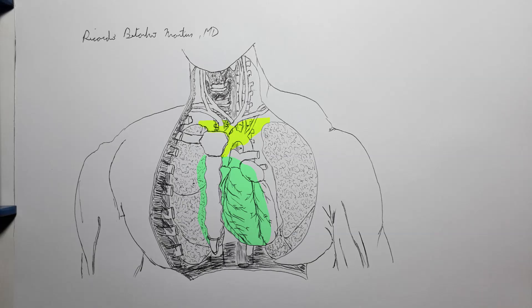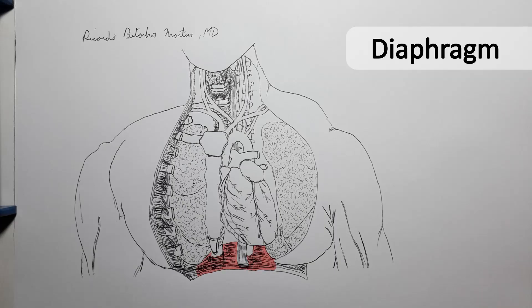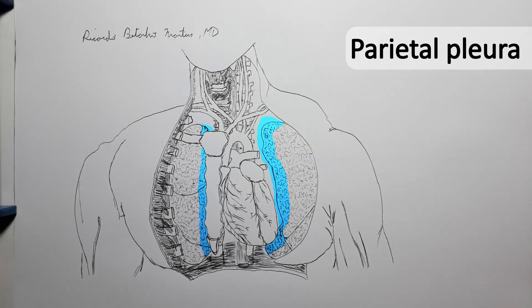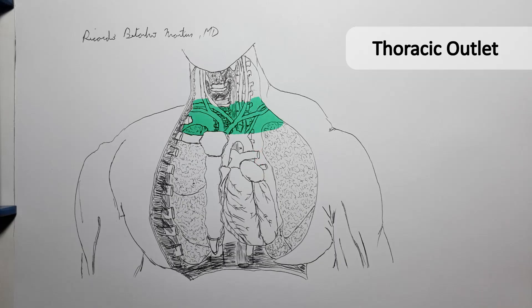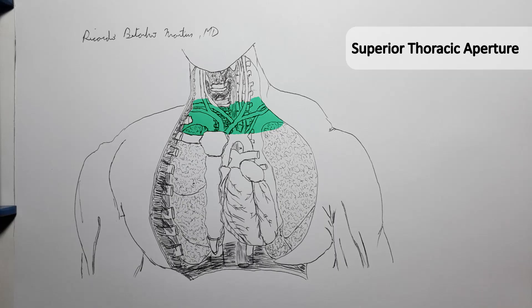In general, the only thing consensual about the mediastinum is that it's bound inferiorly by the diaphragm, laterally by the parietal pleura, anteriorly by the posterior border of the sternum, posteriorly by the posterior margin of the chest wall along with the transverse processes of the thoracic vertebrae, and superiorly by the thoracic inlet — or superior thoracic aperture — through which it connects with the neck.